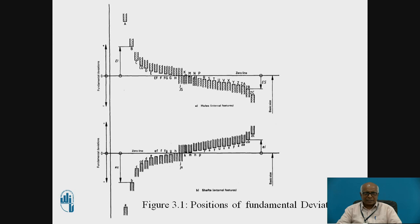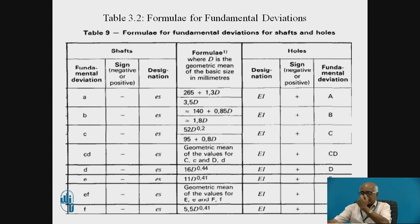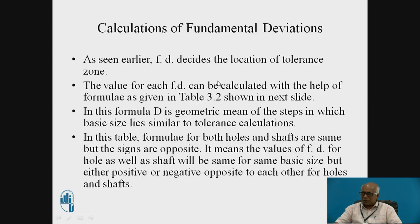This illustrates the positioning of the tolerance zone. Values of each fundamental deviation can be calculated with the help of formulae given in table 3.2 shown in the next slide. In this table the formulae for both holes and shafts are the same but the signs are opposite — the numerical value of FD for a hole and shaft will be the same, but one will be positive and the other negative. If it is positive for holes it will be negative for shafts and vice versa.